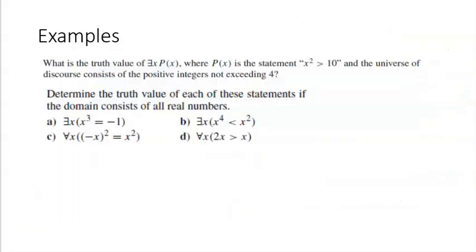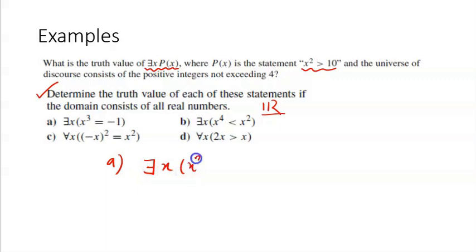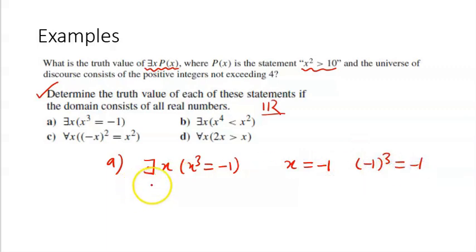Let us determine the truth value of each statement where the domain is the set of all real numbers. First statement: there exists x such that x³ = -1. We can clearly see that x = -1 satisfies this, since (-1)³ = -1. The moment we find one value for which this is true, the statement is true. We got one value and we are done — it is true.